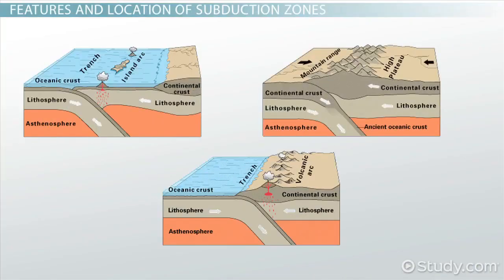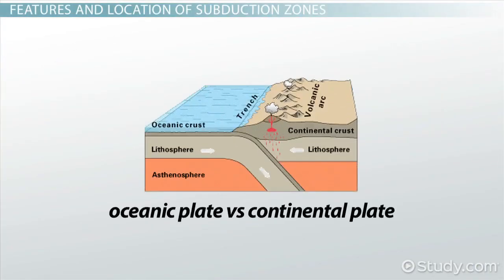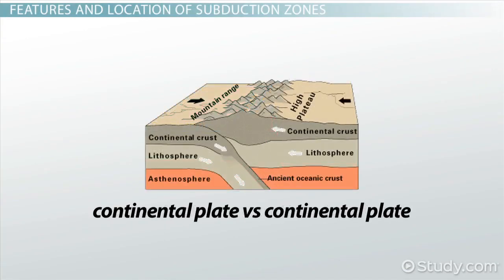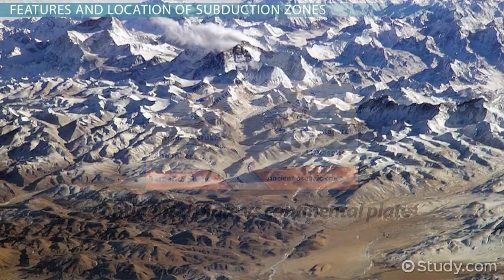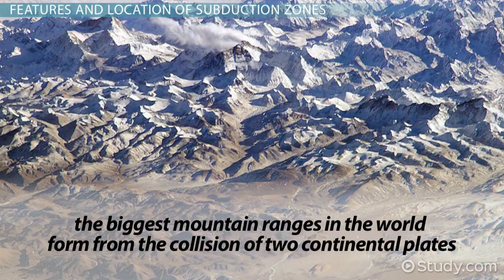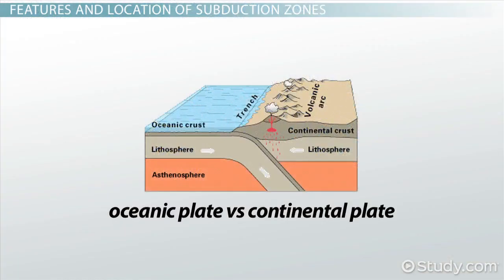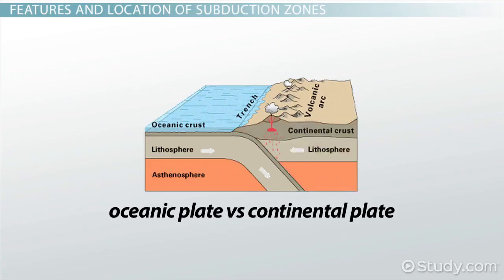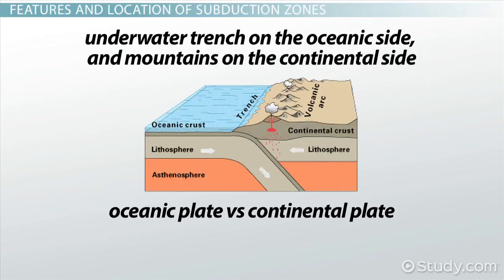Some subduction zones can be shorter-lived than others. If one of the two plates is oceanic, a full sandwich forms and can remain there indefinitely. However, two continental plates collide with such force that the material from each plate is broken up and forced upwards — this is why the biggest mountain ranges in the world form from the collision of two continental plates. When one oceanic and one continental plate collide, the oceanic plate slides below the continental plate, because oceanic rock is denser than continental. Features include an underwater trench on the oceanic side and mountains on the continental side.